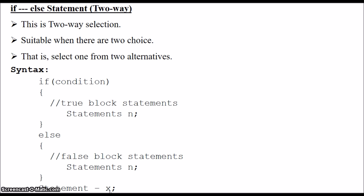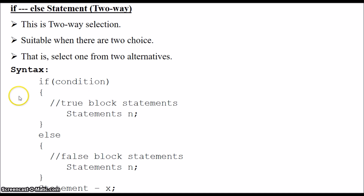Let's check how the execution is done. This condition is evaluated for true or false. If the condition is true, then the true block statements will be executed — all the statements within the true block are executed. If the condition is false, then the control comes to the else part, where all the else block statements are executed. Next, the program execution continues with statement x. So either block is executed, and then the program continues from statement x.